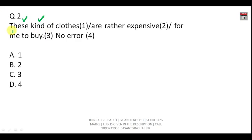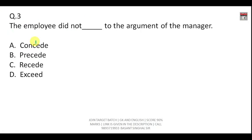The next question is a sentence filler: 'The employee did not ___ the argument of the manager.' When you refuse to accept somebody's argument, the word is 'concede,' and 'concede' is always followed by 'to.' The correct answer is: 'The employee did not concede to the argument of the manager.'